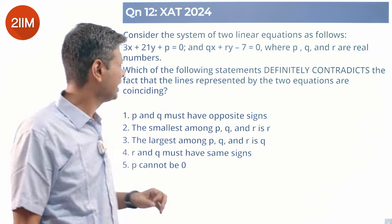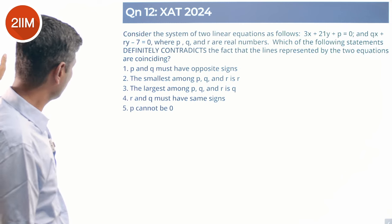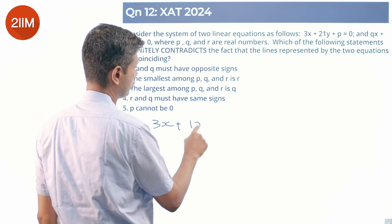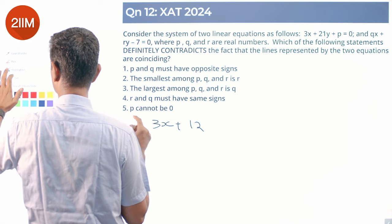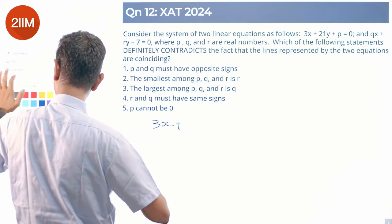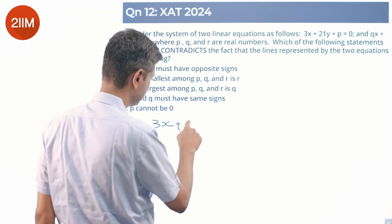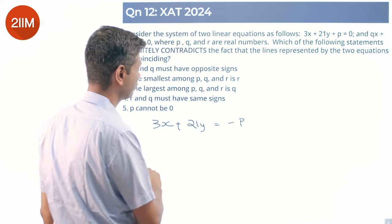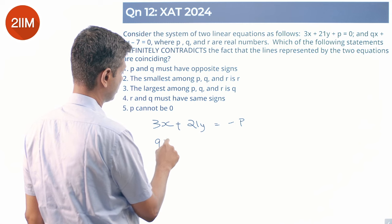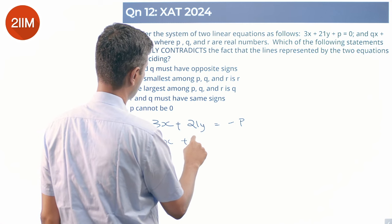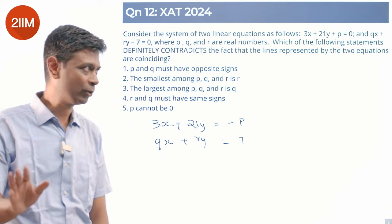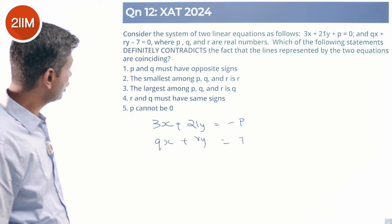If they coincide, what do we know? I'm gonna start with this. I'm gonna say 3x plus 21y - I'm writing 21, some form of dyslexia - equals minus p. Qx plus ry equals 7. I'm not saying dyslexia flippantly, just slipped out. So p, q, and r are real numbers.